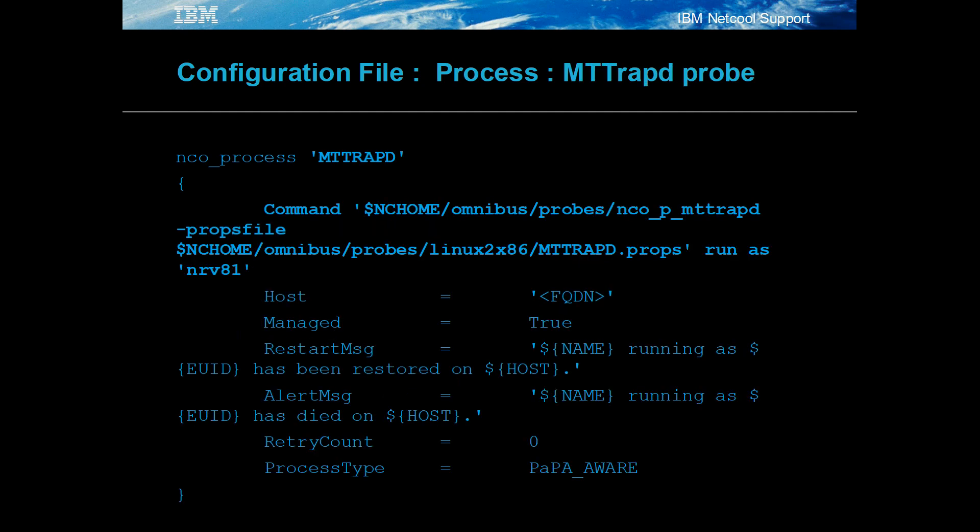For a probe process, the minus props file command line option is used to set the probe properties. The MTRAP D probe can be run as root from NCO_PAD only if the NCO_PAD process itself is run as root. In this example, the MTRAP D probe is run on a port greater than 1024, which does not require root access.